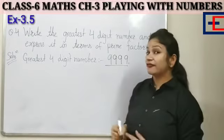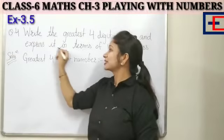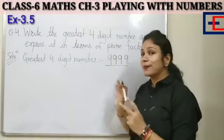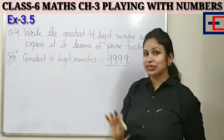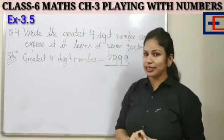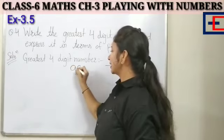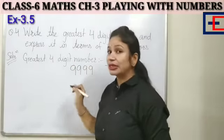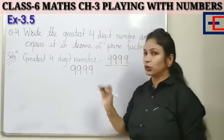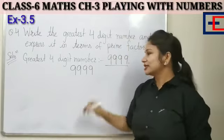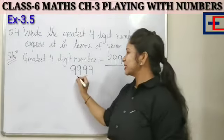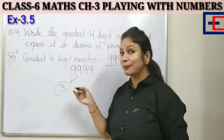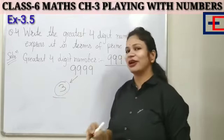Greatest 4 digit. What do we do now? We express it in terms of prime factors. It means that we do prime factorization of 9,999. Now, what number is divisible? 2 is not going to happen. 3. 3 is divisible. First, we will have a factor. 3 is already a prime factor. So, we have a prime factor.